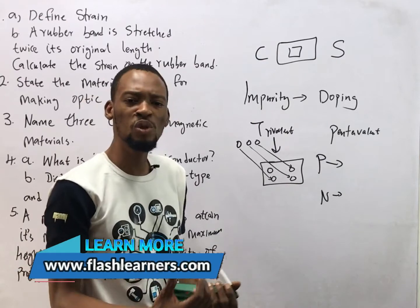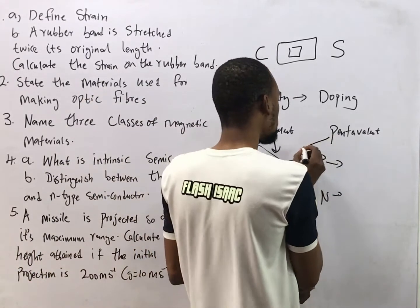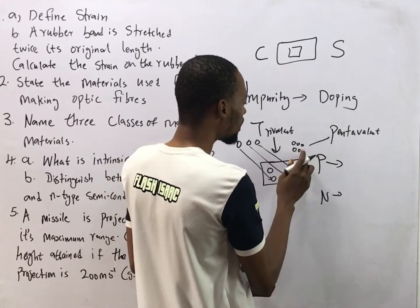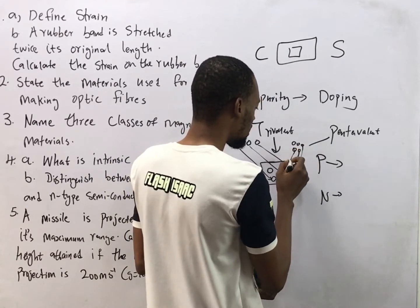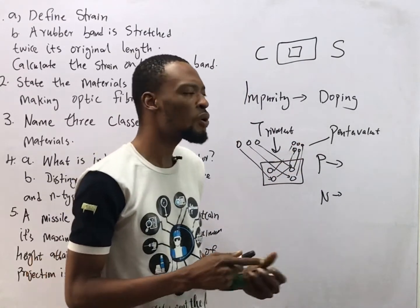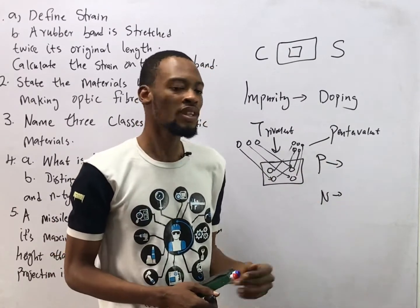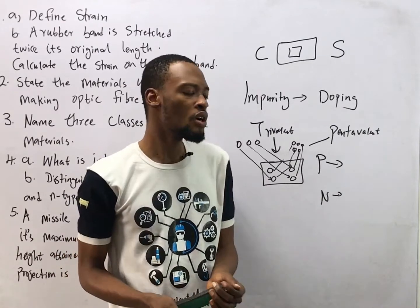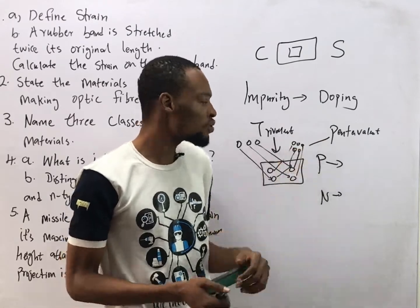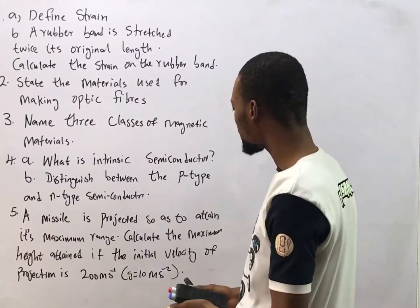On the other hand, when you dope a semiconductor with pentavalent impurities — meaning the impurity has five electrons in the outermost shell — four electrons fill the bonds and one electron is left over. In that case there are more electrons than holes, and we call that an n-type semiconductor. N-type is formed when we dope with pentavalent impurities; p-type is formed when we dope with trivalent impurities.